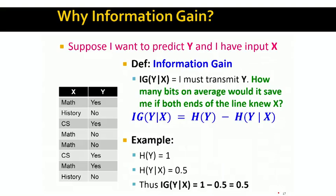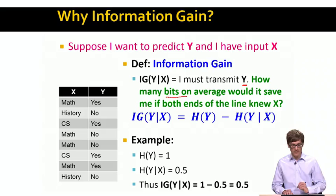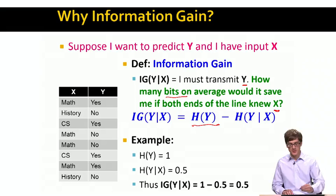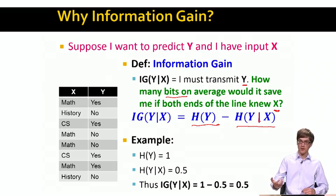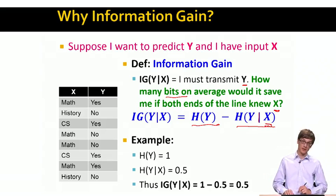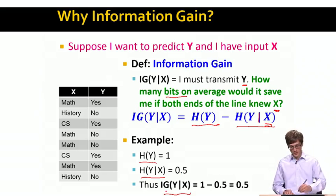Now that we've built all the machinery, we're ready to talk about information gain. Information gain tells us: if we want to transmit y, how many bits would we save on average if both ends already know x? It's basically the difference between the entropy of y and the entropy of y given that we already know x. The bigger the difference, the more x tells us about y. Going back to our data table, we already know that entropy of y equals 1 and entropy of y given x equals 0.5, so the information gain of y given x is 0.5.